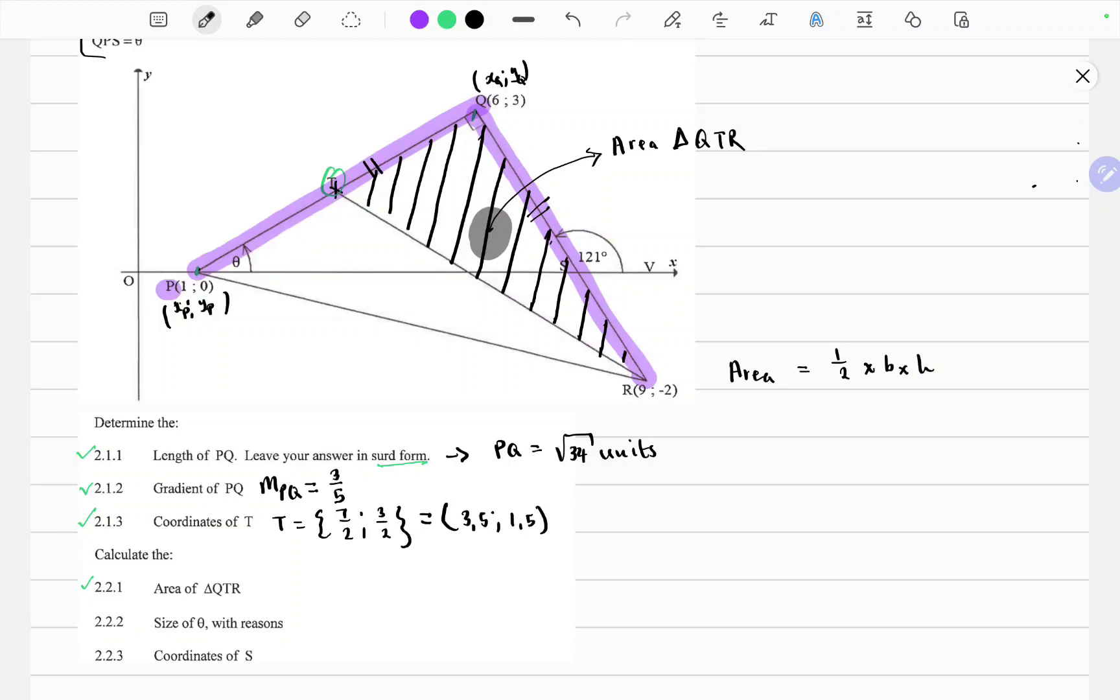So from the triangle that we have we can find the base. Because we have the total length from P to Q. The total length is the square root of 34 units. And because the base is half because this is a midpoint, it means the distance from T to Q is half the distance of PQ. Because T bisects this line segment into 2. So this distance will then be half the distance.